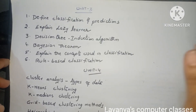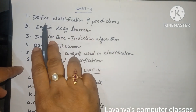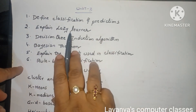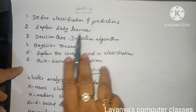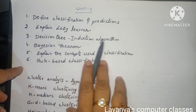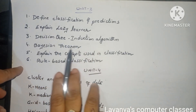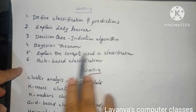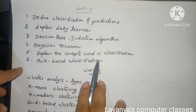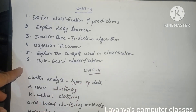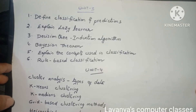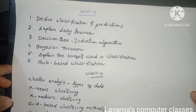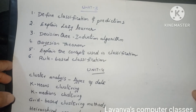The important questions in unit 3 are: define classification and predictions, explain lazy learner, decision tree induction algorithm, Bayesian theorem, explain the concepts used in classification, and explain rule-based classification. These are all explained concept-wise — read all the concepts and it is very easy to attempt all the questions.